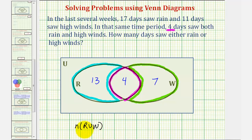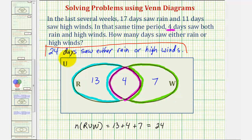This means the number of days in set R or set W, which equals 13 plus four plus seven, which is 24. So 24 days saw either rain or high winds. I hope you found this helpful.